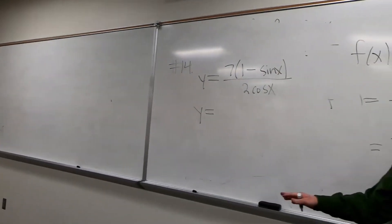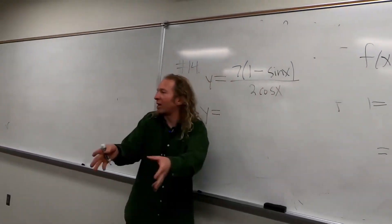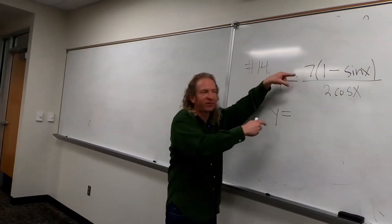So break it up. Don't use the quotient rule. That's the worst thing you can do. So rewrite it. Just try to break it up. Distribute the 7, and then go from there.